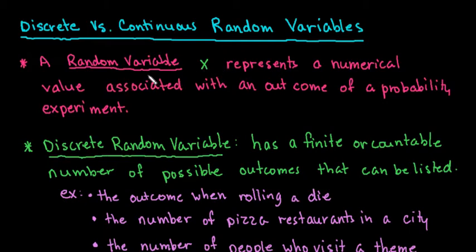What the random variable does is it represents a numerical value associated with an outcome of a probability experiment. In the real world, we deal with a lot of random variables. We deal with things that change all the time.